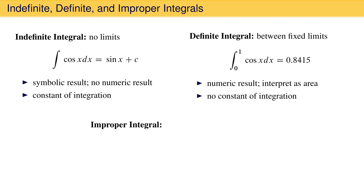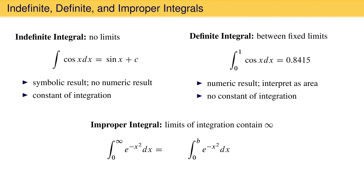An improper integral is one that has limits of integration containing infinity. An example is the integral from 0 to infinity of the Gaussian function e to the minus x squared dx. Improper integrals like this are defined in terms of a limiting process that replaces infinity with some variable, such as b, and takes the limit of the integral as the variable goes to infinity. In this case, the result is the square root of pi over 2.